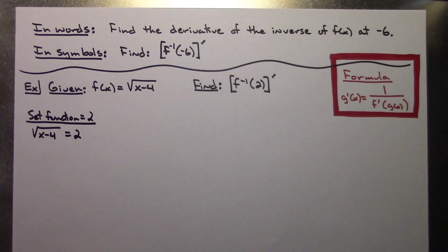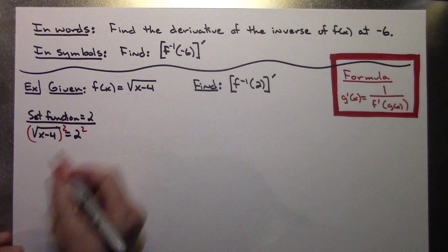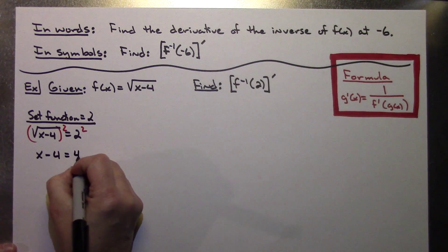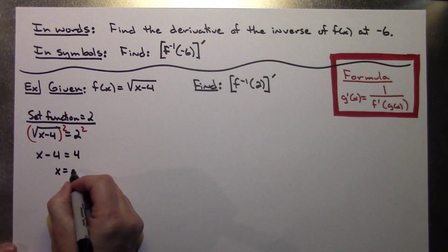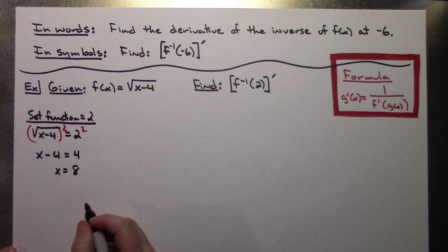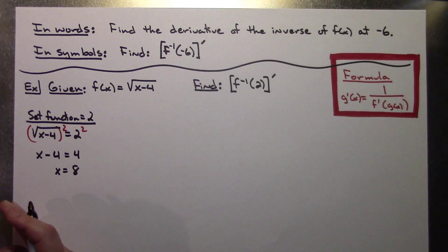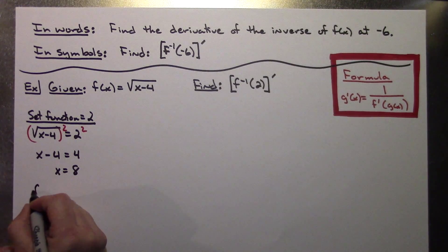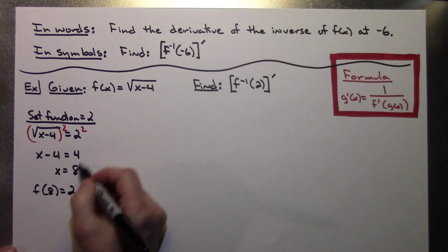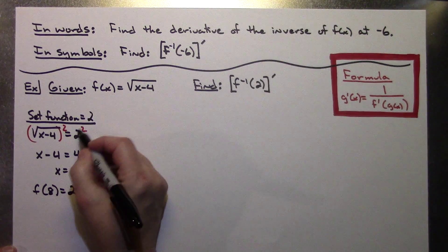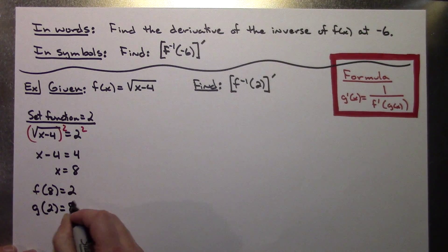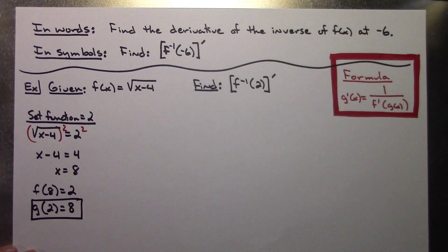Squaring both sides gets rid of the square root, leaving x minus 4 equals 4. Adding 4 to both sides gives x equals 8. From this first step, remembering that the domain of the function is the range of the inverse and vice versa, I can write f of 8 equals 2. Then I can conclude that my inverse function g of 2 equals 8, and that's something I'll need for the formula in the last step.